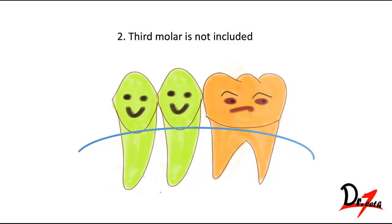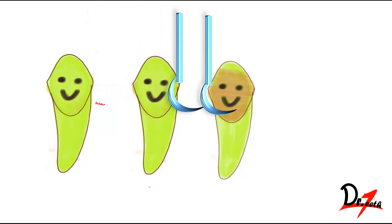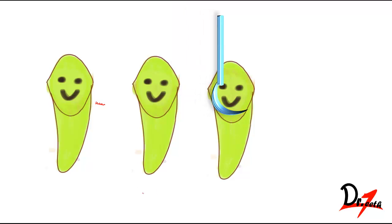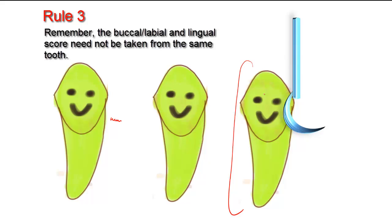We take a 23 explorer, which is the shepherd's hook, and move it along the buccal, labial, and lingual surfaces to see how much debris is collected. We do the same with all the teeth. The tooth with the maximum debris is selected in the segment.